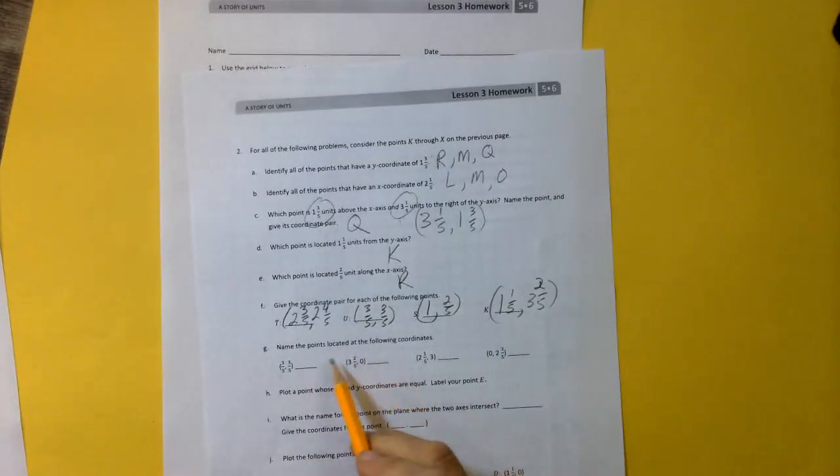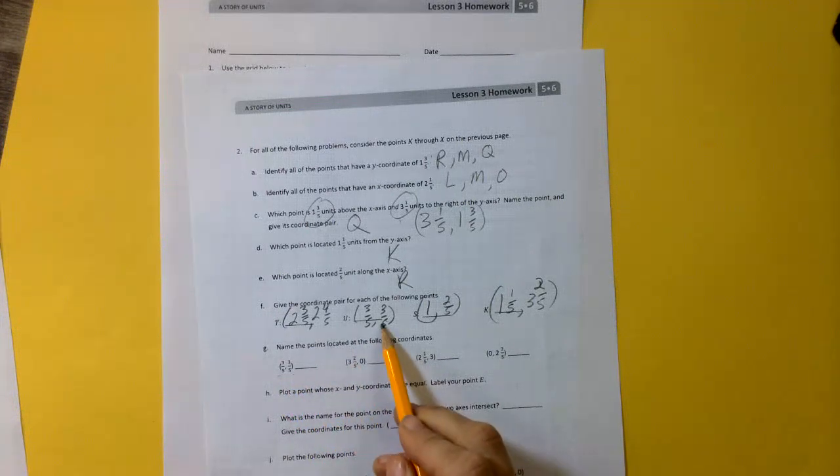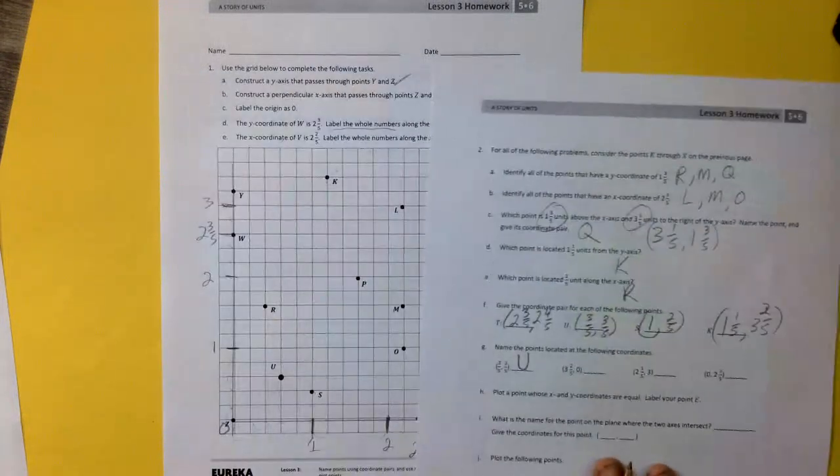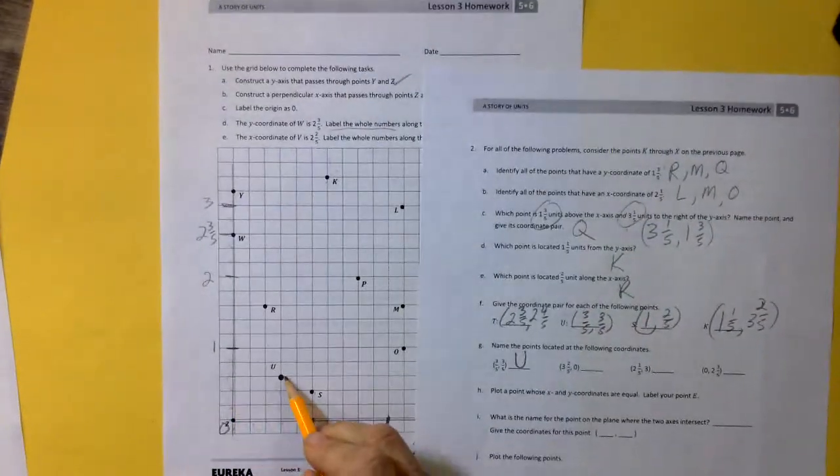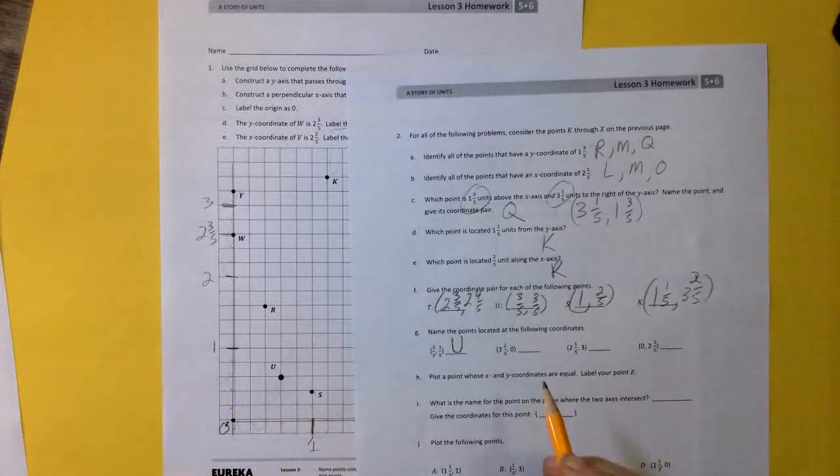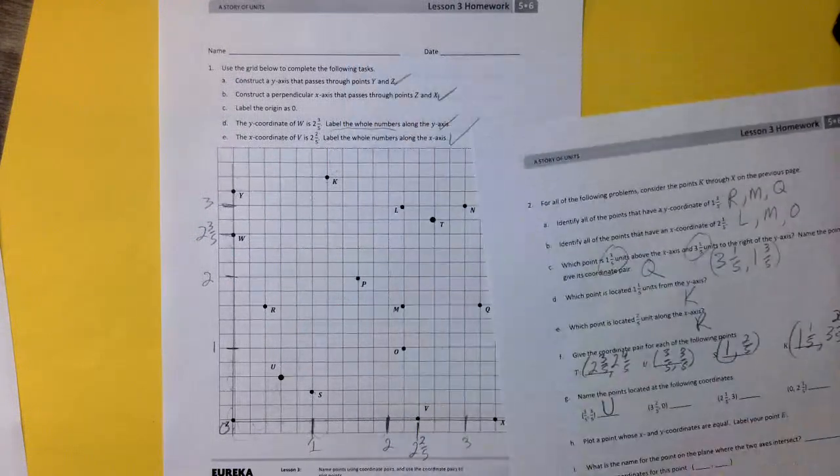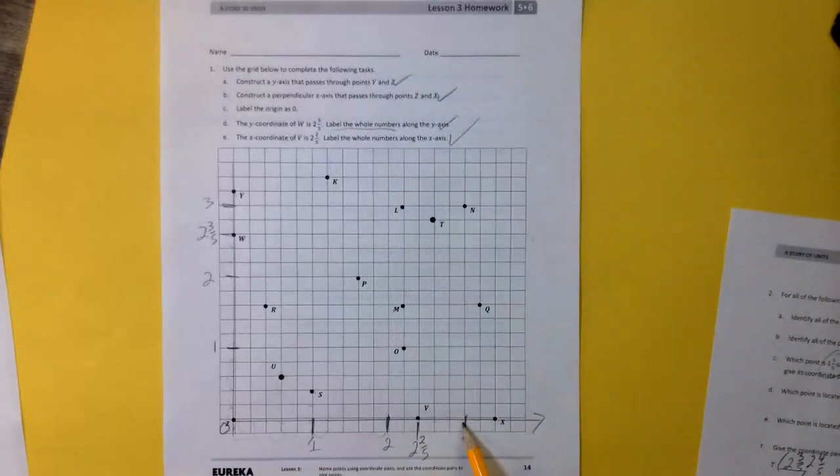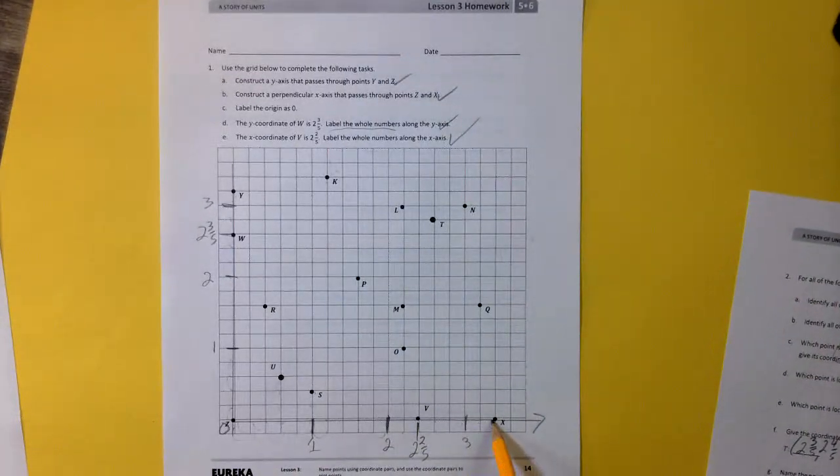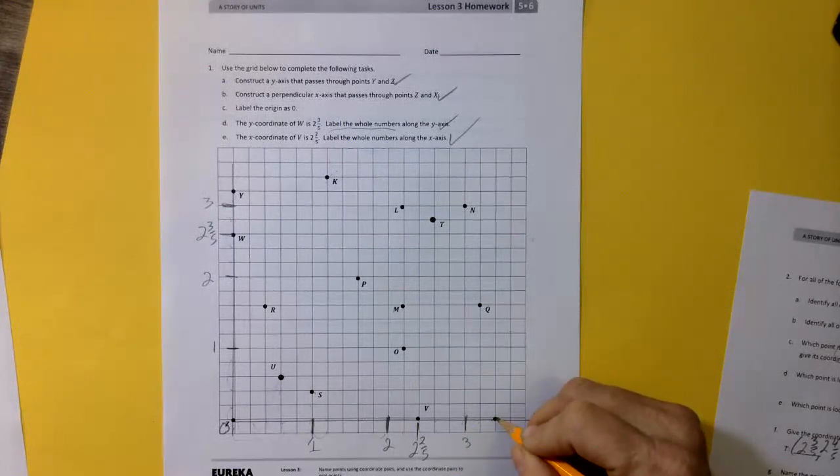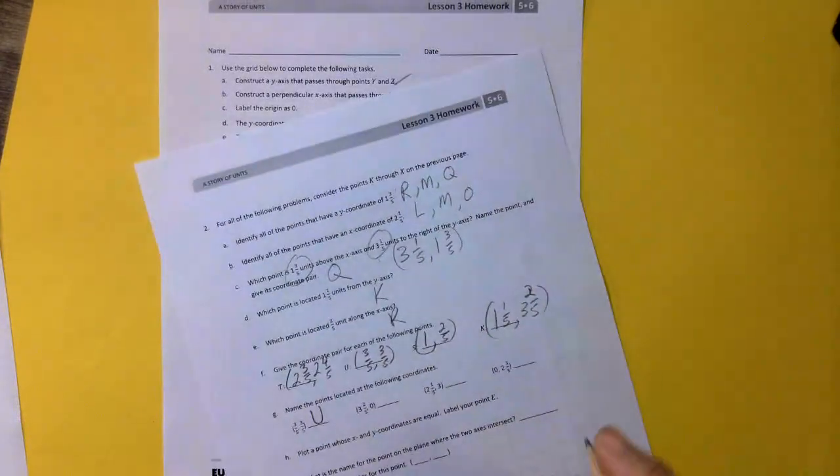You name the points located the following coordinates. 3 fifths and 3 fifths. Well, we just did that one. That's U. 3 fifths and up 3 fifths. 3 and 2 fifths and 0. 3 and 2 fifths. So we're going to go over 3 and 2 fifths and up nothing. And we land on X. Right?